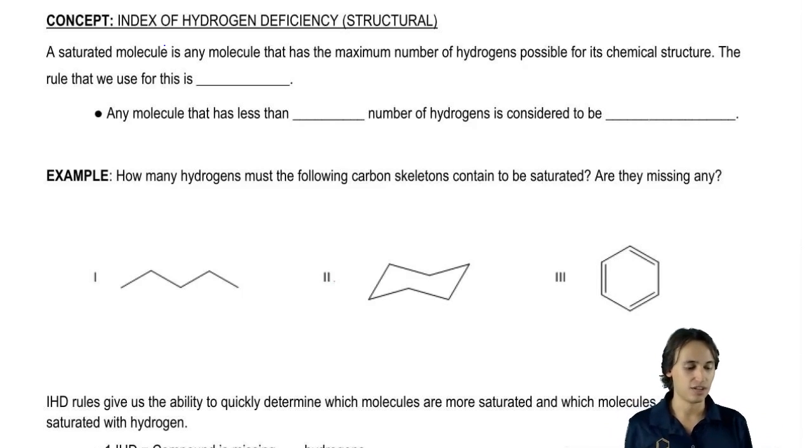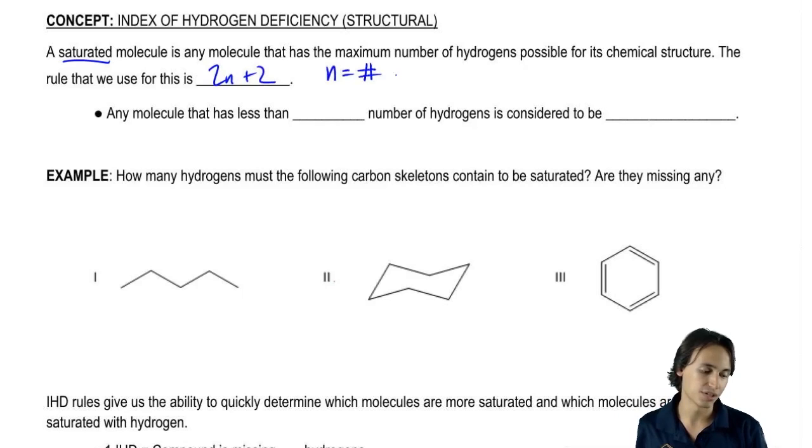So what's that word saturated? Well, a saturated molecule is any molecule that has as many hydrogens as possible. And there's this formula that we can use in all chemistry to figure out if it has as many hydrogens as possible and that formula is, maybe you remember it from Gen Chem, it's 2n plus 2 where n is equal to the number of carbons.